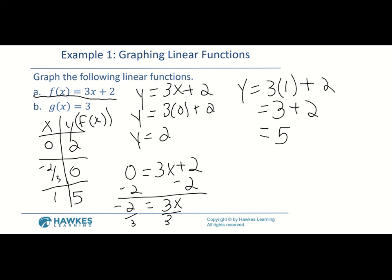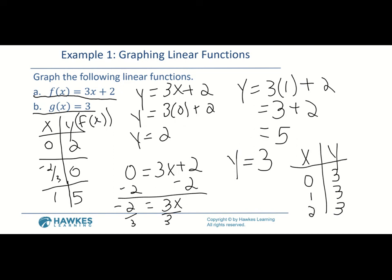For part b, g(x) = 3. Remember, g(x) indicates it is a function, but looking at the equation we really have y = 3. There's no x value — this is called a constant function. When we make a t-chart, y is always going to be 3 and x can be any number. Recall that y = 3 graphs as a horizontal line.